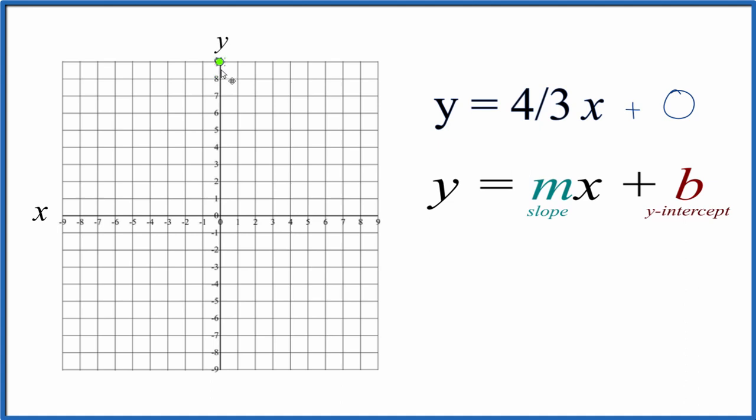Because now we go to the y-axis, we find zero, and that's where the line y equals four-thirds x, that's going to cross the y-axis right here at the y-intercept.